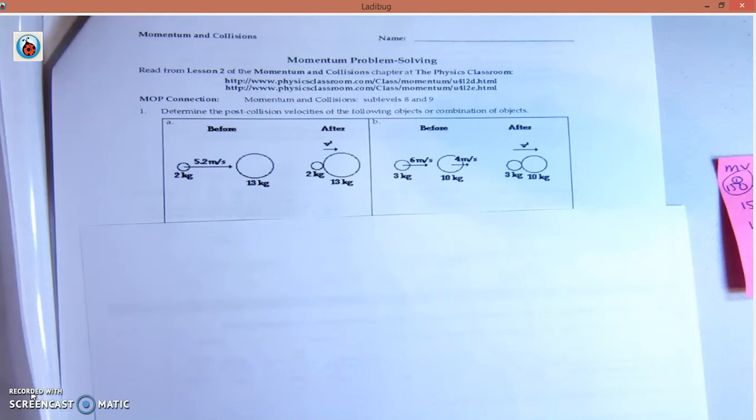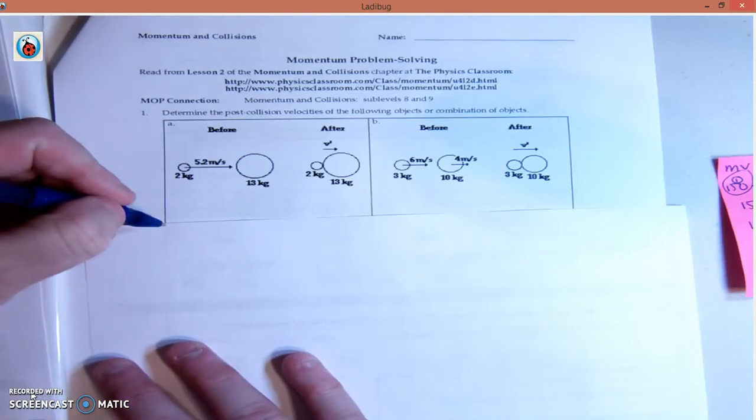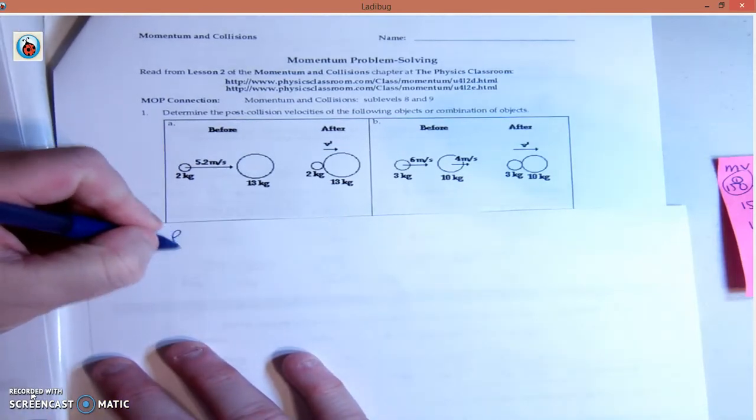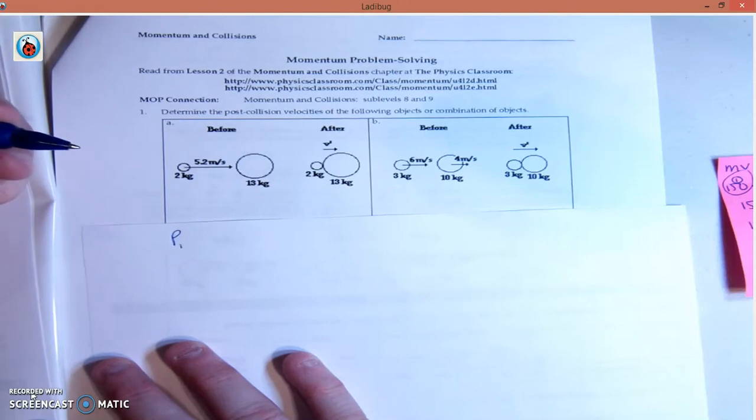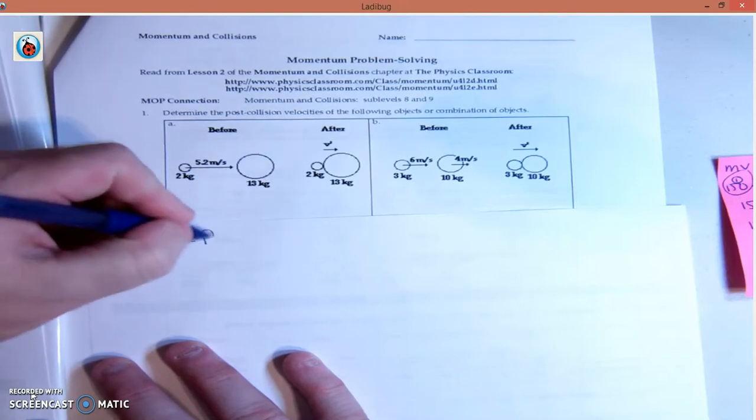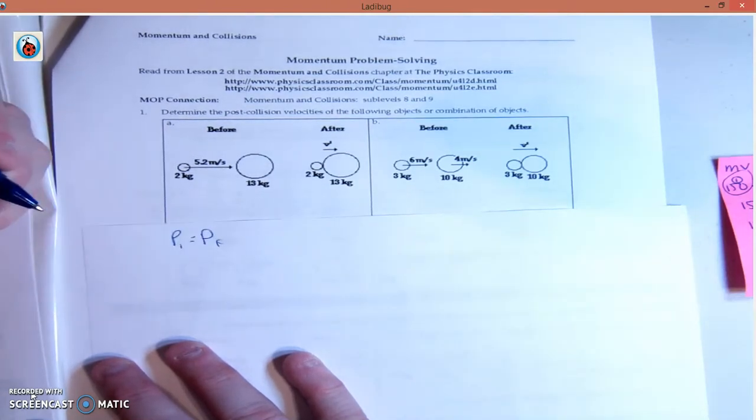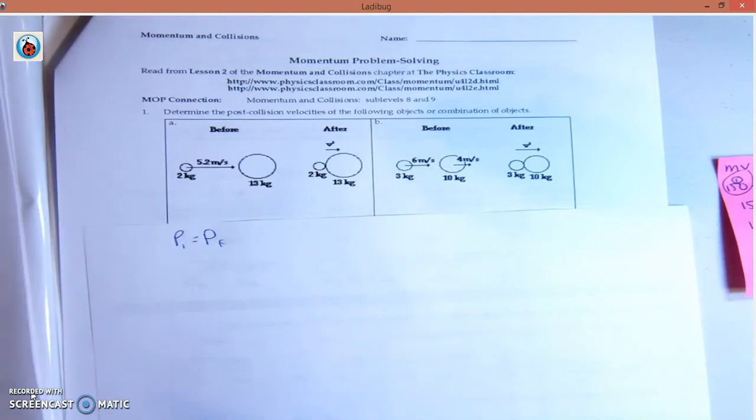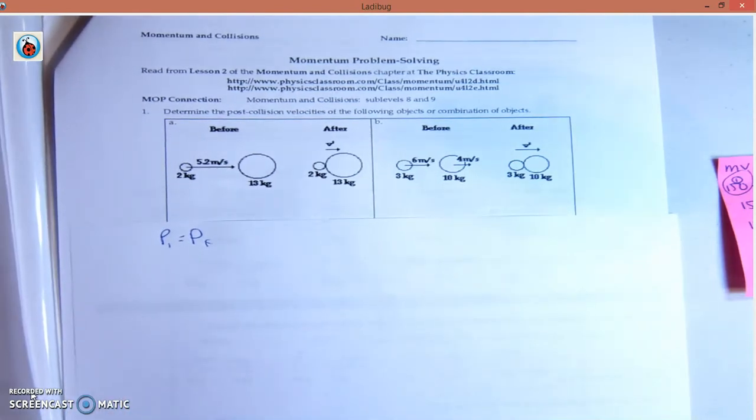Let's start with what we know. P initial equals P final, where P is momentum. You need to get in the habit of writing things over and over until you have it memorized, until you don't have to think anymore. For now, we write it again and again, every step.